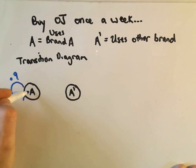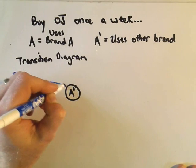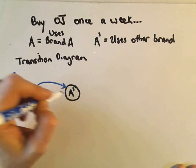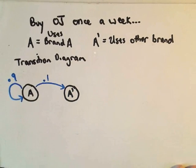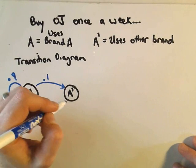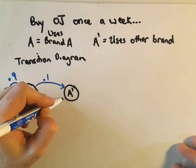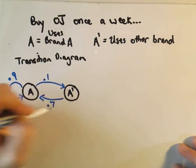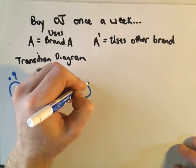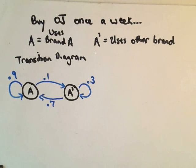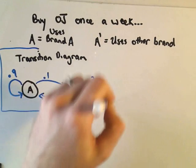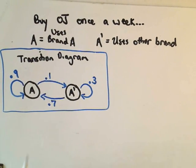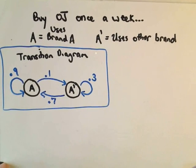If there's a 90% probability you'll stay with brand A, that means there's a 10% chance — 0.1 probability — that you'll switch. We said if you're using some other brand, there's a 70% chance that you'll switch into brand A, which means by default there's a 30% probability that you'll keep using some other brand. This is what's known as a transition diagram — it represents the probabilities of staying in your current state or possibly switching to some other state.